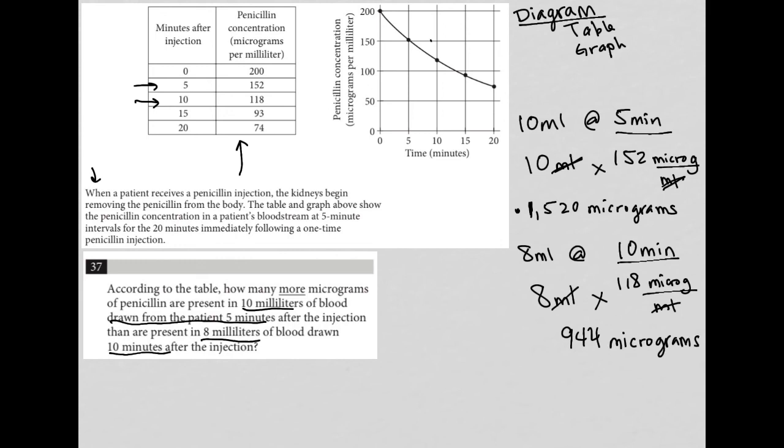So again, the question wanted to know how many more micrograms of penicillin are present at the 10. So at 10, I'm at 1,520. At 8 milliliters, I'm at 944. So I'm just going to find the difference of 1520 minus 944 will tell me how much more I had. When I go to my calculator, 1520 minus 944 is 576 micrograms. So that should be our answer.